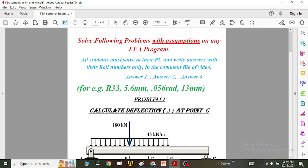So you will write it: your roll number, comma 5.6 mm, comma 0.56 radians, comma 13 mm in the comment file of this video that I am going to send you right now. And again, this is very important in order to get this stuff right now.